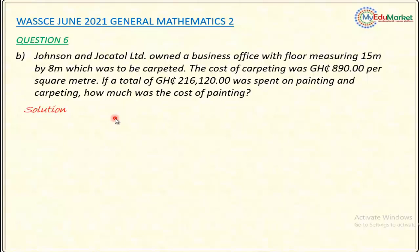Solution: In the question, a total of 216,120 Ghanaian cedis was spent on painting and carpeting — this is the total for both. The cost per square meter of carpet is 890. So if I can get the cost of carpeting and subtract it from the total cost, it will give me the cost of painting, which is what the question asks.